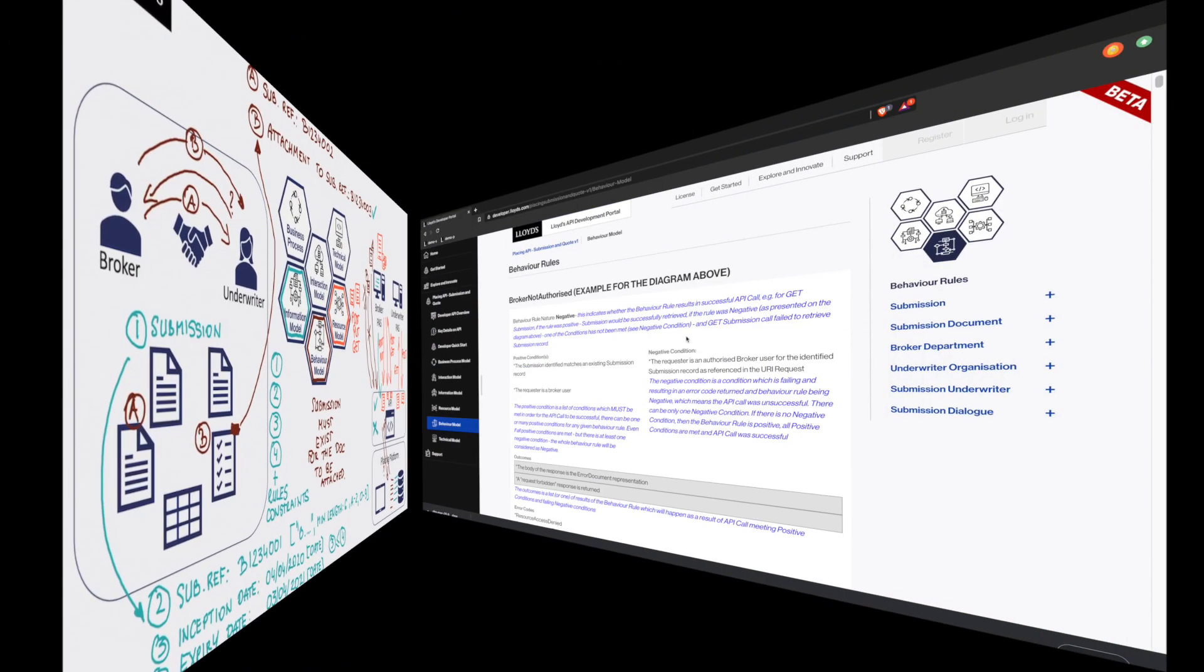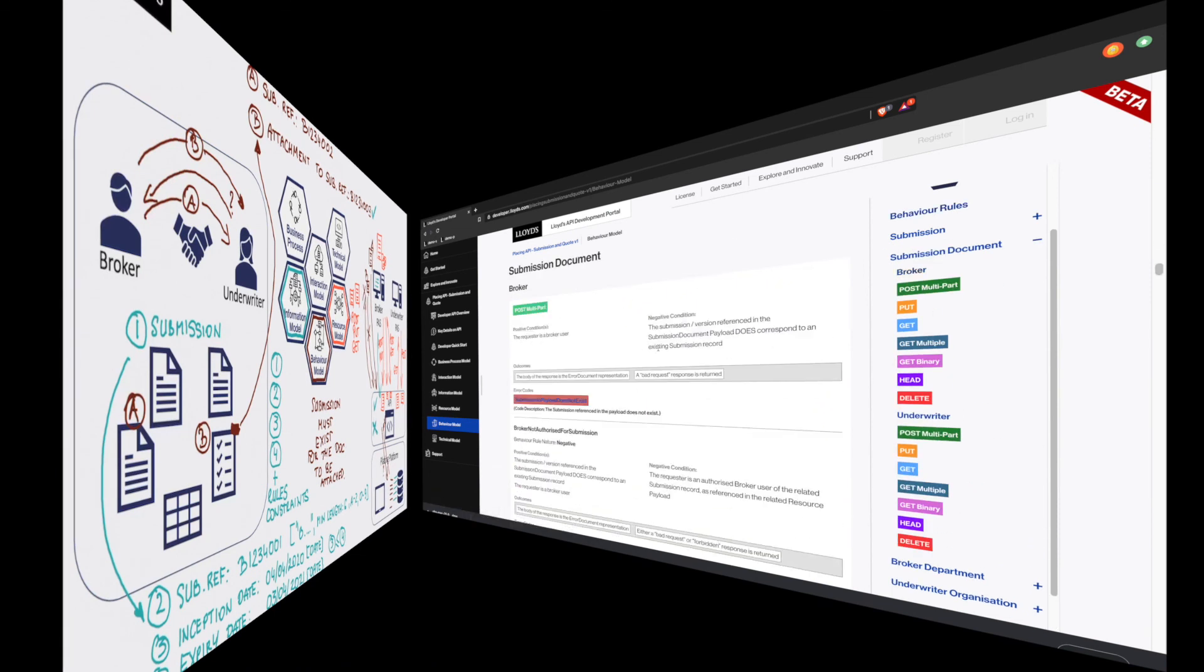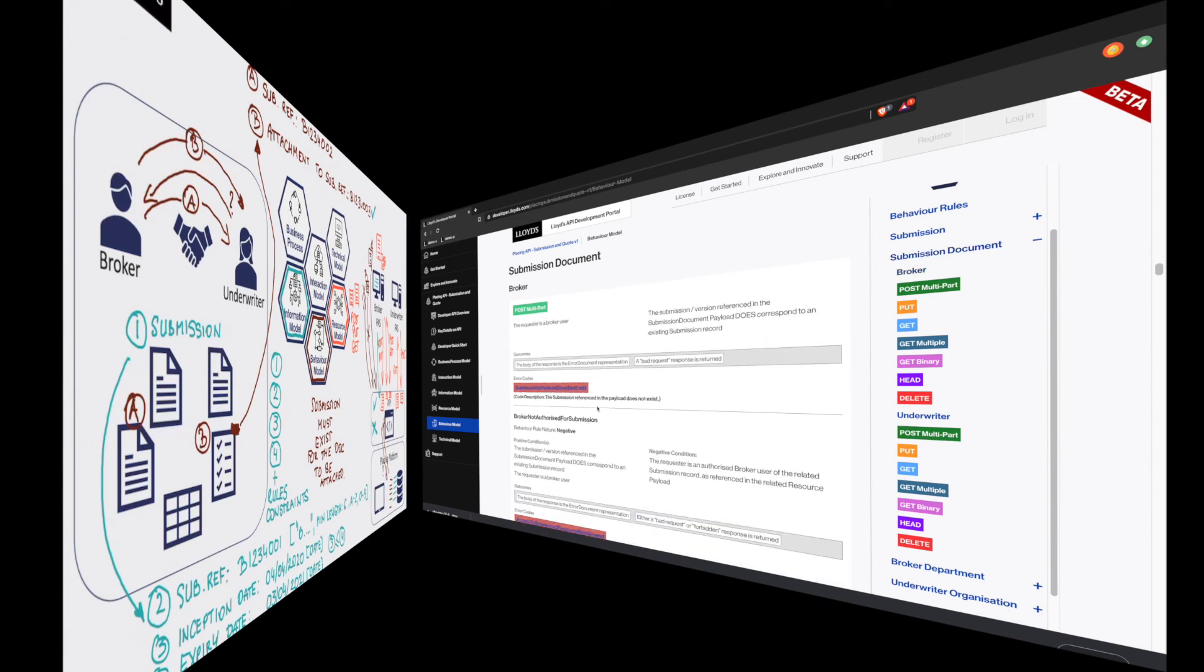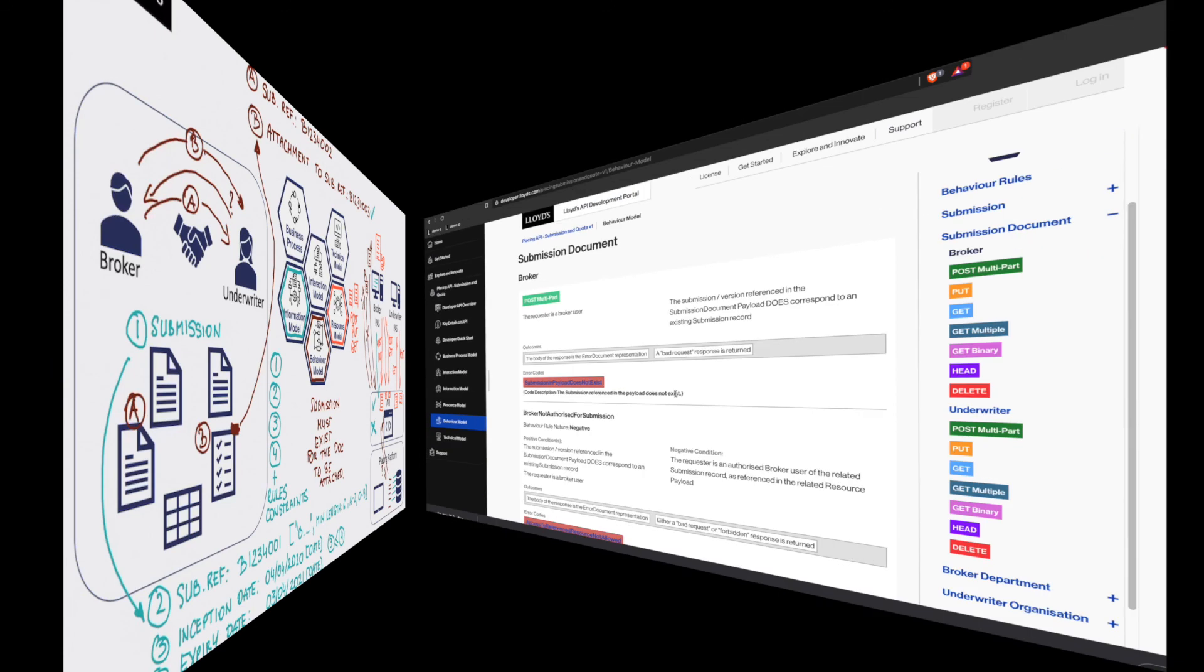Those details on behavior model can be found in the behavior model section of the portal, and the behavior rules are organized by resource, actor and method. We can see a detail here which talks exactly about the example we provided and refers to the non-existent submission whilst uploading the attachment. And it also provides the error messages expected.